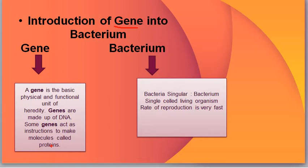Genes combine with DNA to transfer hereditary characters, but they also form molecules called proteins. These proteins are used in our life for different processes — for medicines, for vaccines, for insulin production. We use proteins to make our life easier. So a gene is basically a tiny unit made up of DNA.